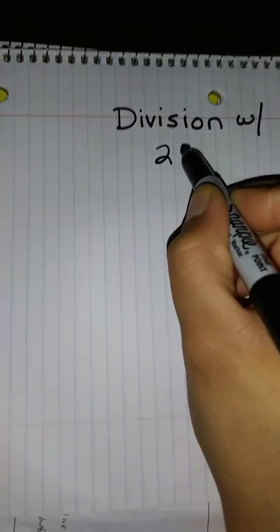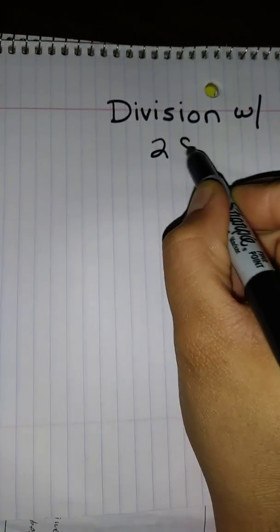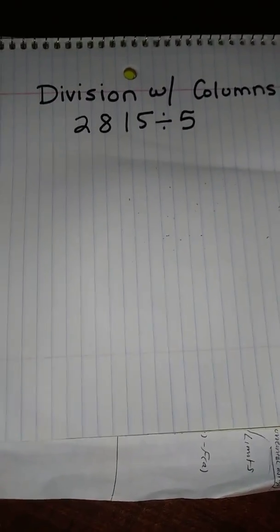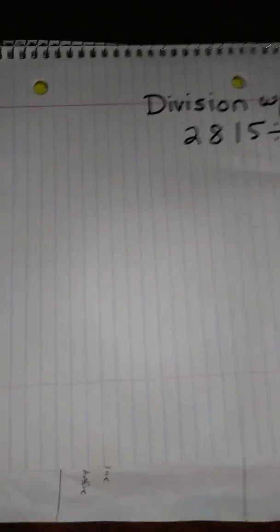Let's start with the problem 2,815 divided by 5. Alright, so the first thing I'm going to do is head over to my side and I'm going to create a large tic-tac-toe mat.